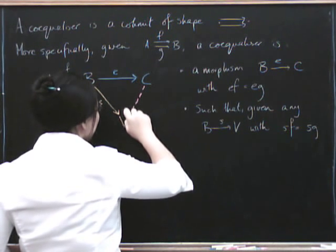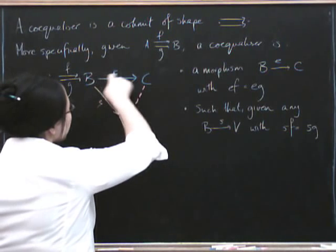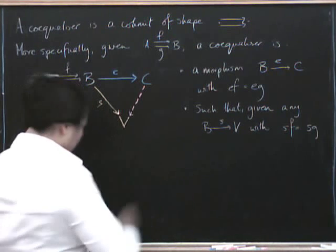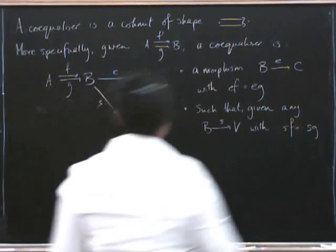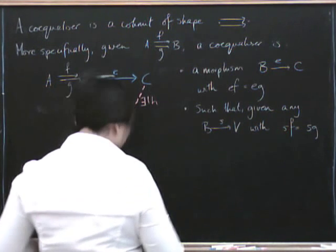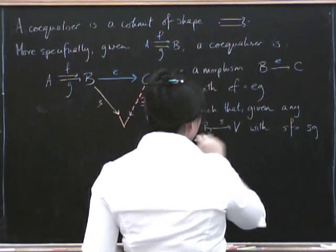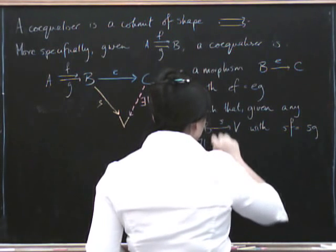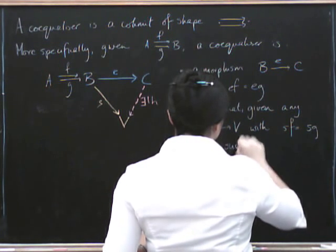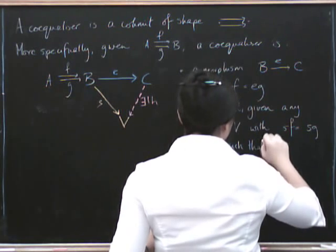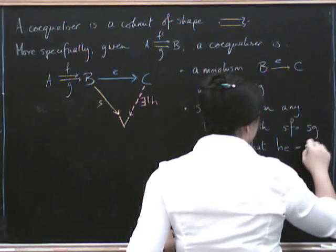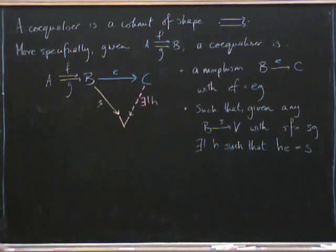And because this is a co-limit, it comes out of the universal one. Remember, the universal one has to be a factor. You have to compose it with something else to get the non-universal one. So what this says is that there exists a unique H like that. So let's write it up. Given any one of these, there exists a unique morphism H, such that H composed with E equals S. Okay, that is the definition of co-equalizer.